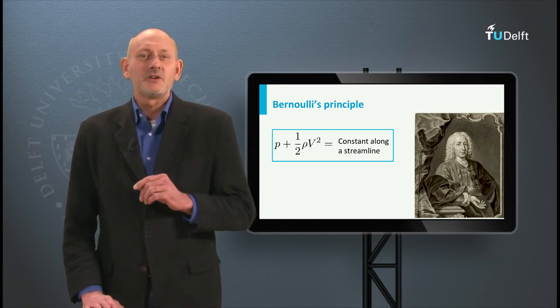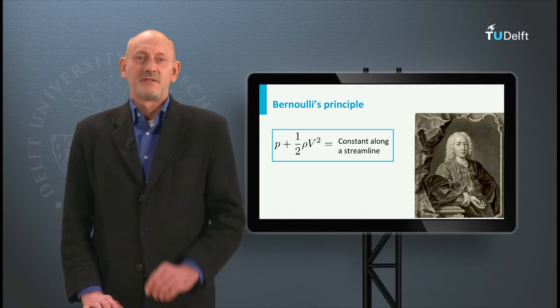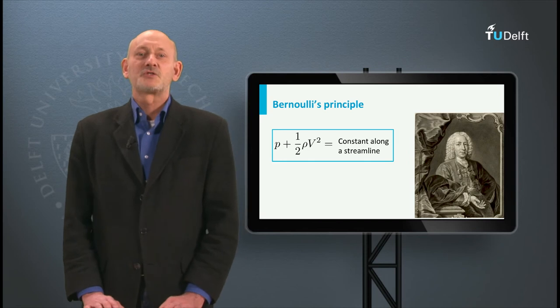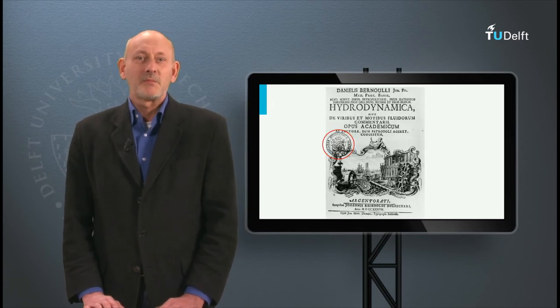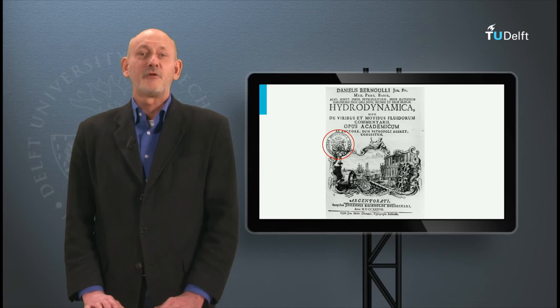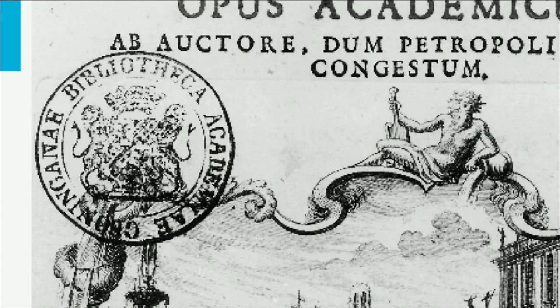It was in St. Petersburg that Daniel Bernoulli laid the foundation of the equation we just derived. He reported about it in his work Hydrodynamica, which was published in 1738, four years after his return to Basel. Here we see the cover of this document — as you can see it is in Latin. According to the stamp, this copy comes from the library of Groningen University, where Daniel's father Johann was a professor for ten years.